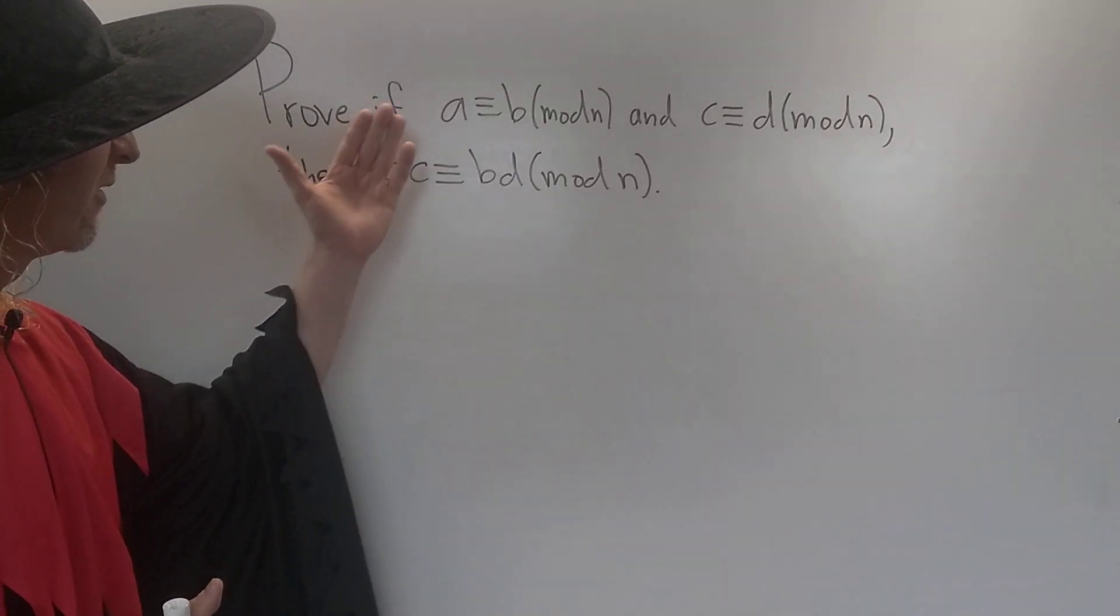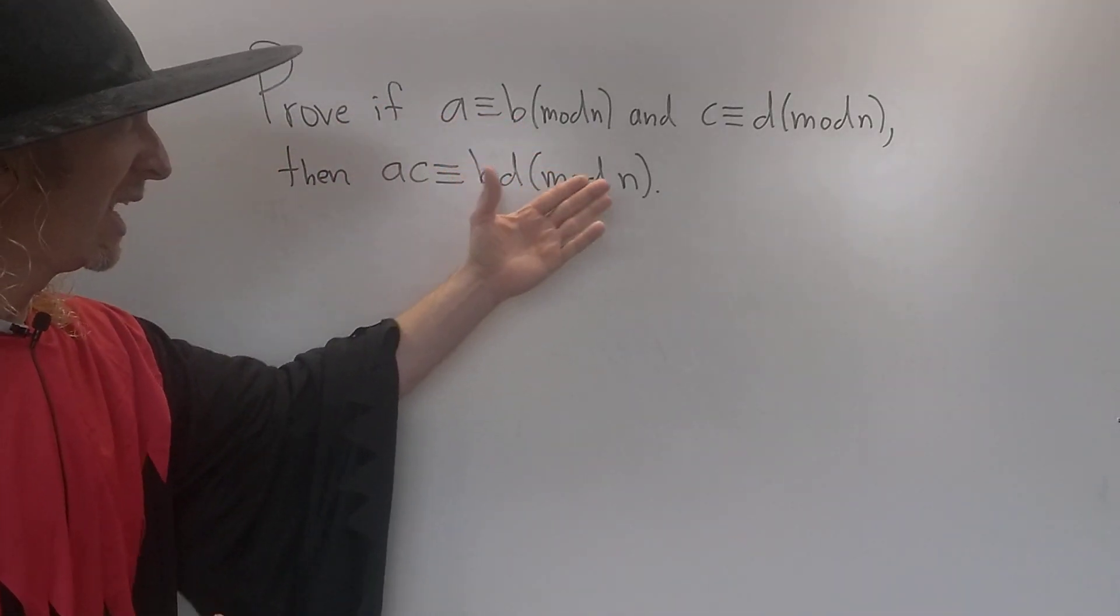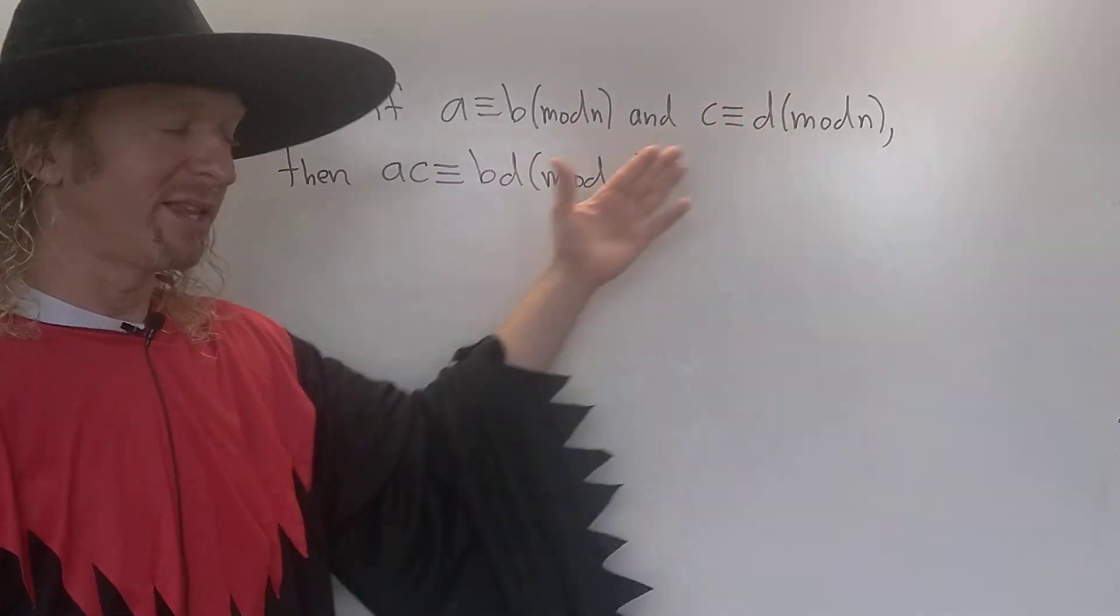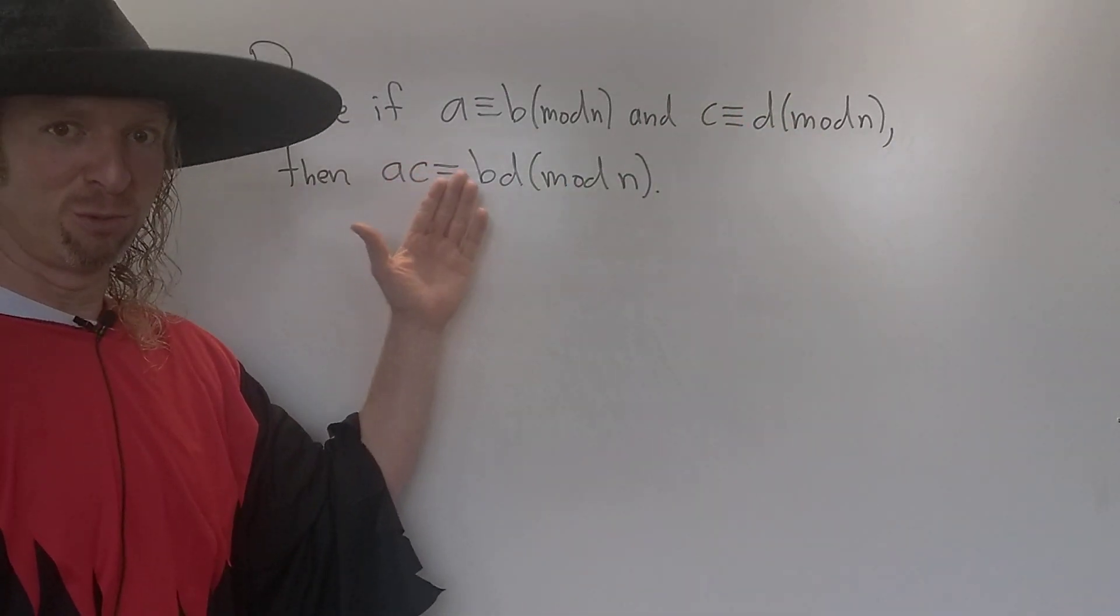Hey, what's going on? In this problem, we're going to prove that if you have A congruent to B modulo N, and C congruent to D modulo N, then AC is congruent to BD modulo N.